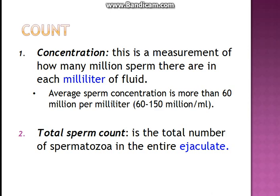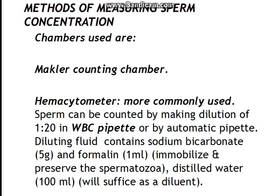Now going to sperm count. Sperm concentration means the measurement of how many million sperms are present per ml of fluid, and normally it is more than 60 million per milliliter. Total sperm count is the total number of spermatozoa present in the entire ejaculate, whereas concentration is calculated per ml of fluid.